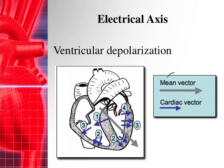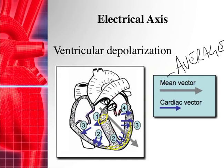Mean is just another word for average. What we're talking about is the wave of depolarization within the ventricles. When your ventricles depolarize, it doesn't all happen at once — it's quick, but first your septum depolarizes, then your apex, then the lateral walls, then your high lateral wall. It moves in a wave fashion, and there are thousands — if not millions — of cardiac vectors.